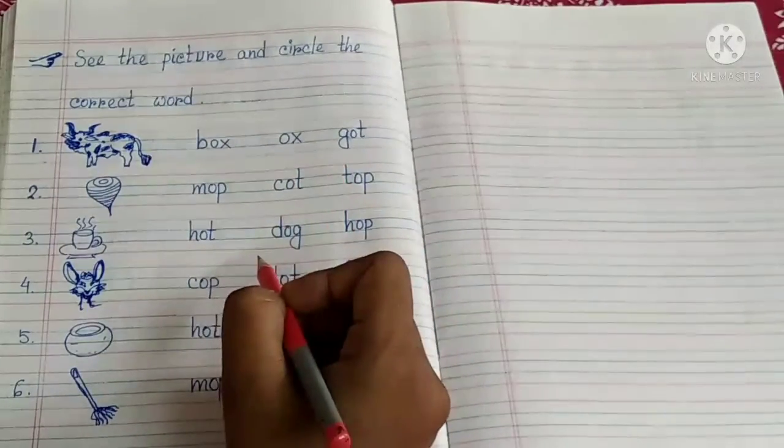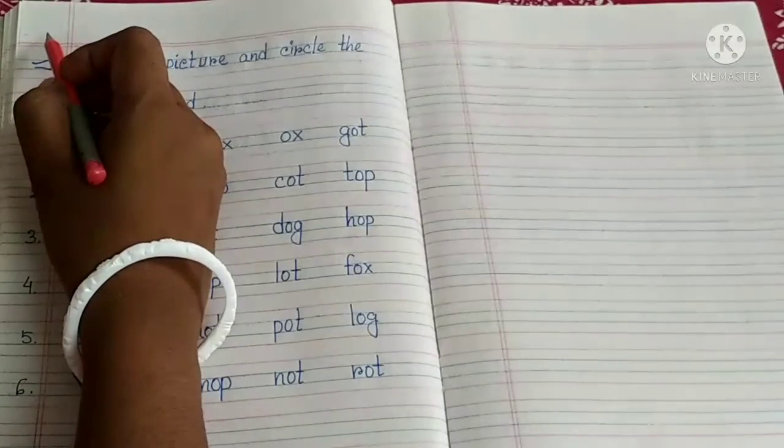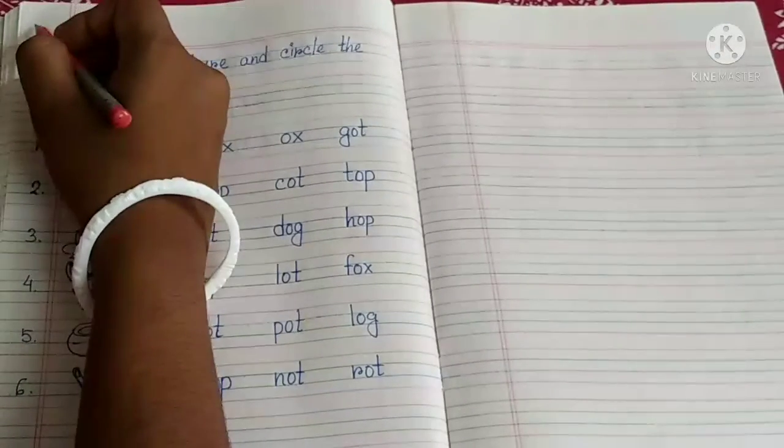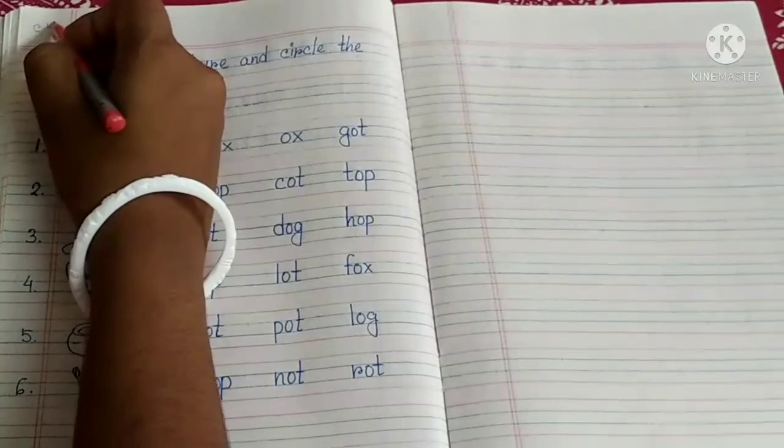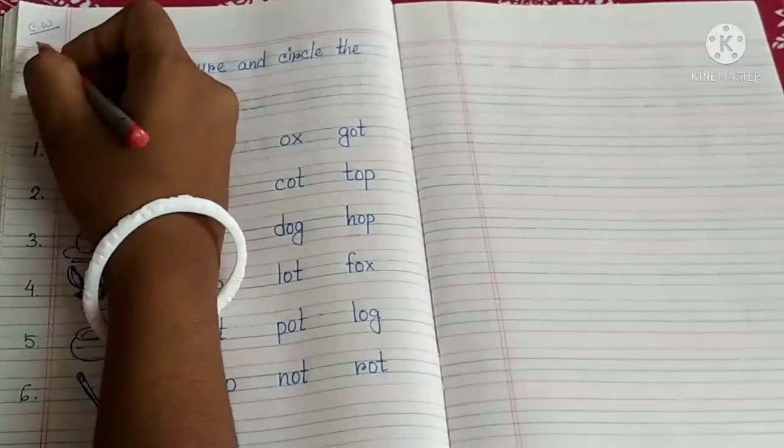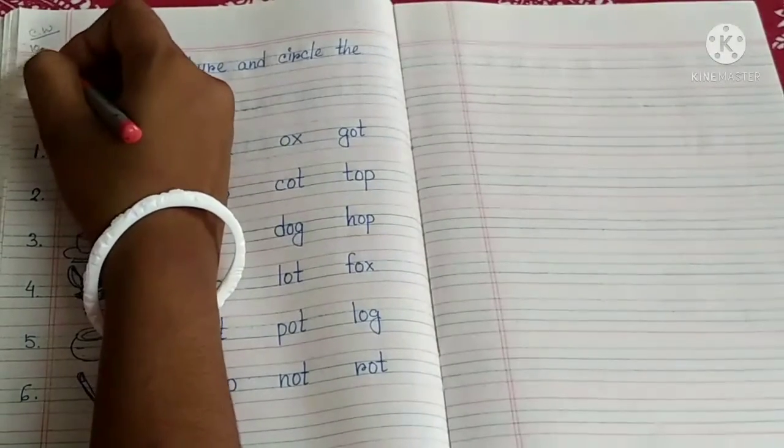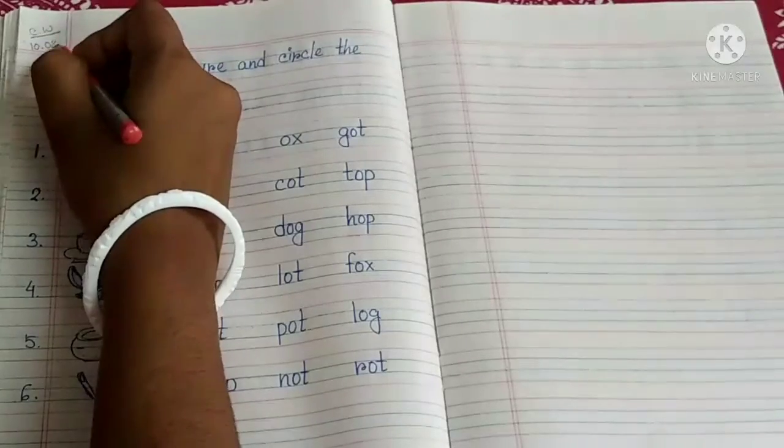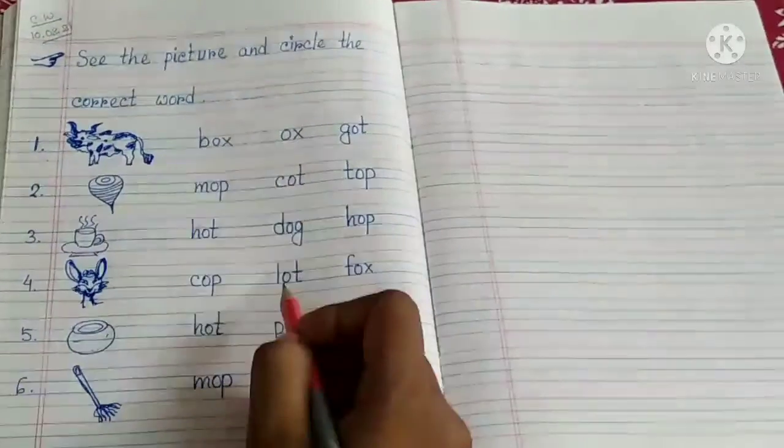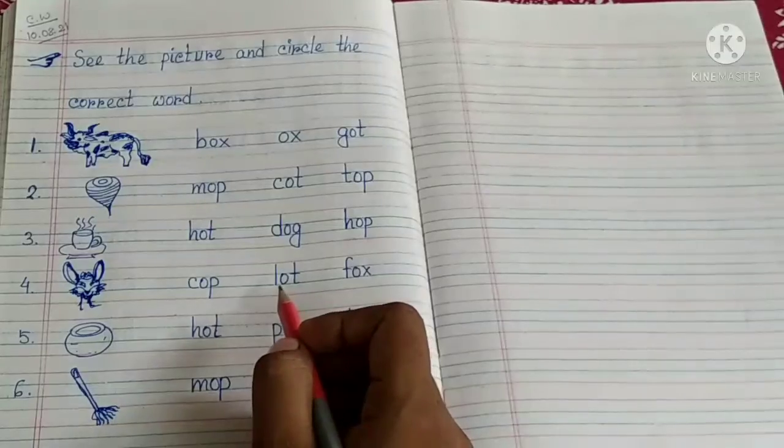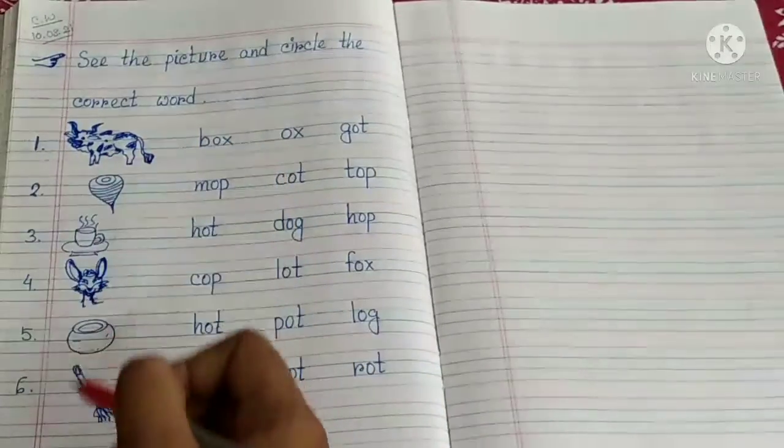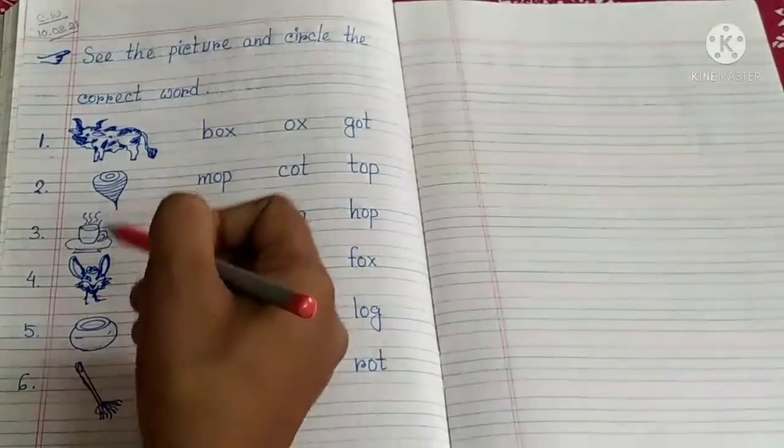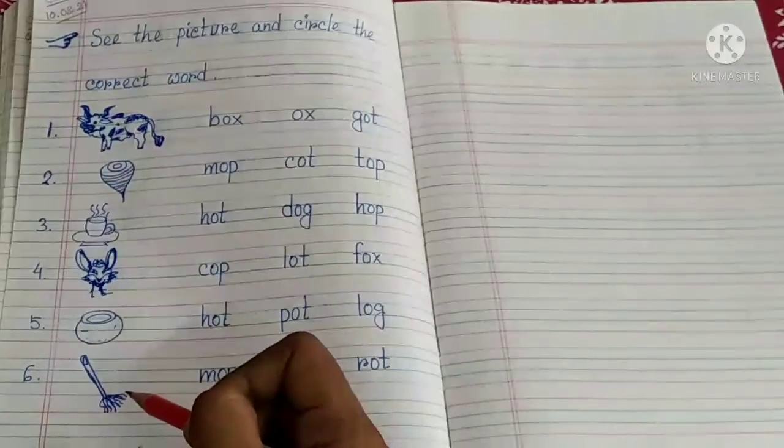So first, you put today's date and write CW here in the corner: CW and today's date 10/08/21. Now, parents can help with the drawing, or children can do it themselves if they want.